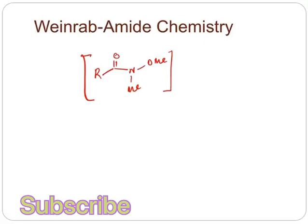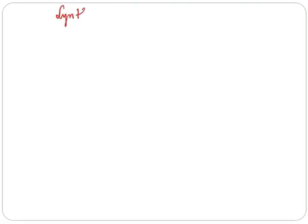I will discuss how to synthesize Weinreb amide and then the application of Weinreb amide. Then we will discuss the mechanism — how it actually gives the product, that means the ketone — and subsequently I will discuss some examples. First, the synthesis portion. From acyl halide as well as different esters we can get Weinreb amide.